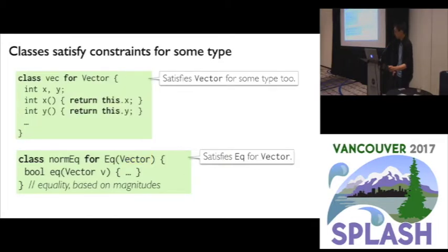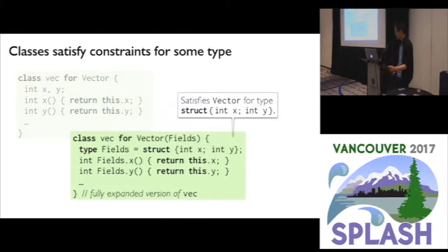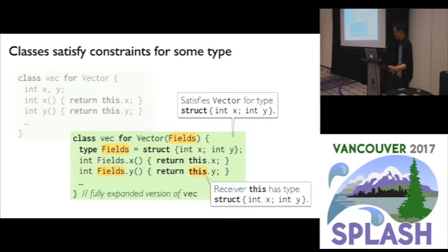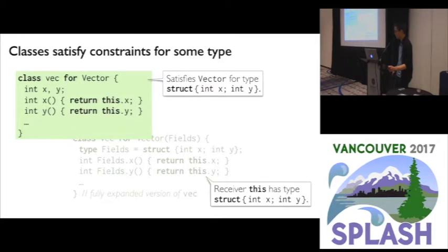Class Vec satisfies its interface Vector for some type. When fully expanded, class Vec satisfies Vector for the structure type formed by its fields. Here we use a nested type called Fields that is bound to the structure type. The field accesses type-check because the receiver this has this nested type, which has the X and Y fields. A class in Familia satisfies some constraints for some type. Class Vec satisfies Vector for a structure type, but Vector can also be satisfied for other types, including interface types.